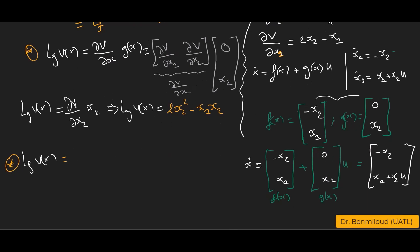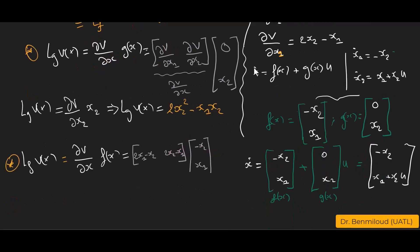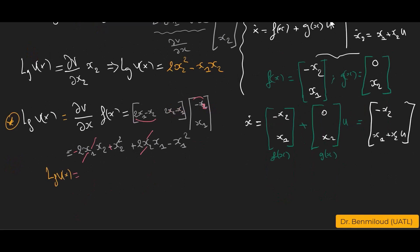The Lie derivative Lf·v = (∂v/∂x)·f(x) = [2x₁ - x₂, 2x₂ - x₁]·[-x₂, x₁]ᵀ = (2x₁-x₂)(-x₂) + (2x₂-x₁)(x₁). Simplifying: -2x₁x₂ + x₂² + 2x₂x₁ - x₁². The 2x₁x₂ terms cancel, giving Lf·v(x) = x₂² - x₁².